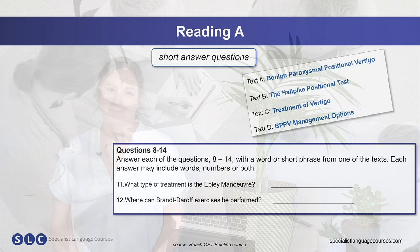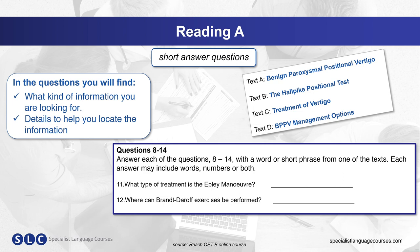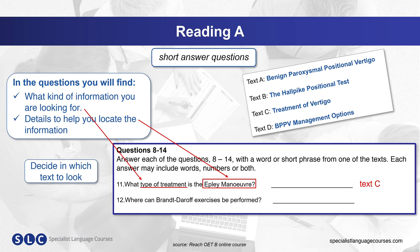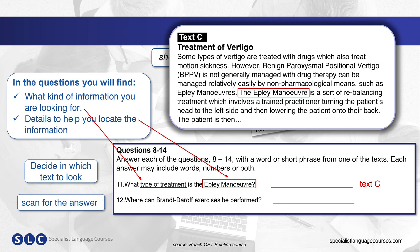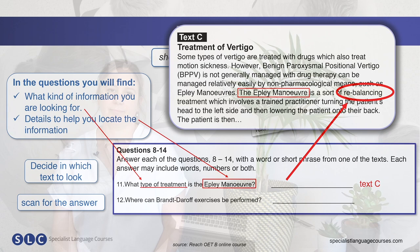Now let's look at short answer questions. In each question, you can see what kind of information you are looking for and words and phrases to help you locate the answer. For question eleven, we want to find the type of treatment that the Epley Maneuver is, and 'Epley Maneuver' is the word we should scan for to find the relevant part. We need to decide which text to look in, and as we are looking for a treatment it's probably going to be in Text C. Fairly quickly we can find the Epley Maneuver and, reading there, we can see that it is a rebalancing treatment — so that is the answer.